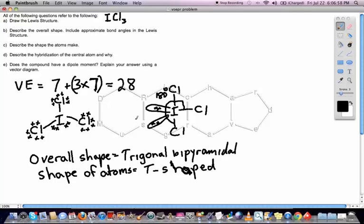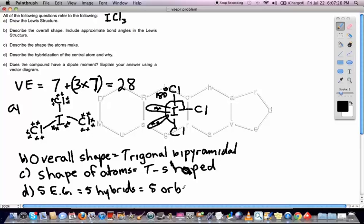Now we can go ahead and get the hybridization. We've got five electron groups, which means we need five hybrids. And that means we need five orbitals to make those five hybrids. And those five orbitals would be S, plus P, plus P, plus P, plus a D. And that would be sp3d. So that's hybridization.